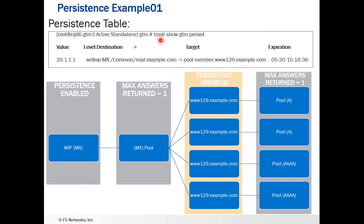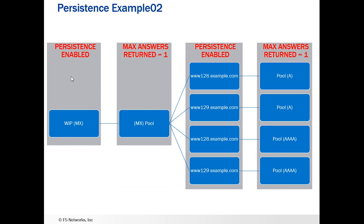Looking at the persistence table using the tmsh show gtm persist command: for 28.1.1 at the wide IP level, for the MX type for mail.example.com, we are persisting to pool member www.128.example.com. We have persistence enabled there, so we see a persistence record for that. With persistence disabled at the secondary level, there are no further persistence records. Let's take this one step further and enable persistence at the second wide IP level with max answers returned equal to 1.